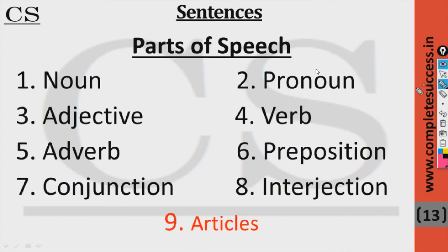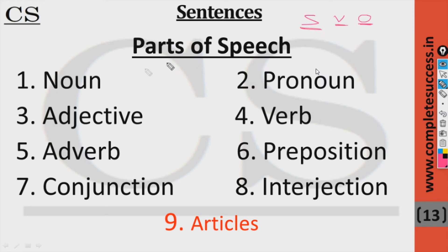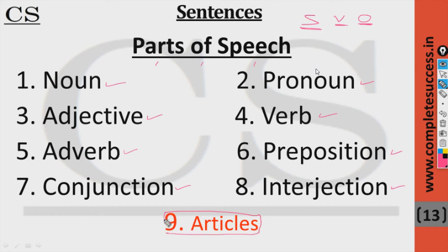Next is parts of speech. In a sentence we use subject, verb, and object. The words used in a sentence belong to what we call parts of speech. These are: noun, pronoun, adjective, verb, adverb, preposition, conjunction, and interjection. The last portion is called articles — you can also call them determiners.